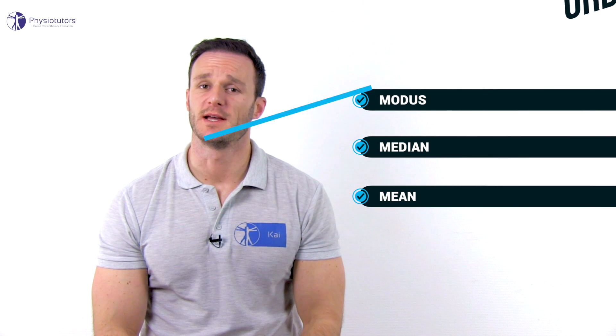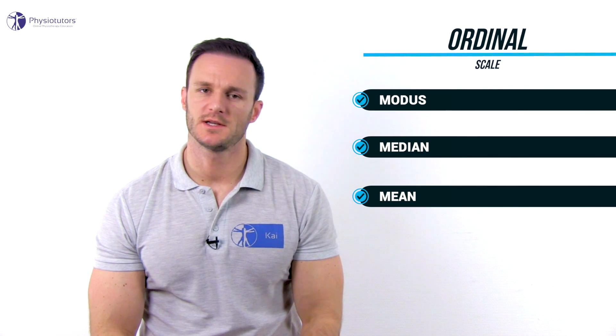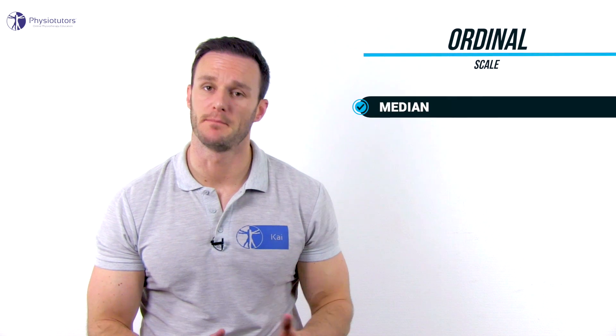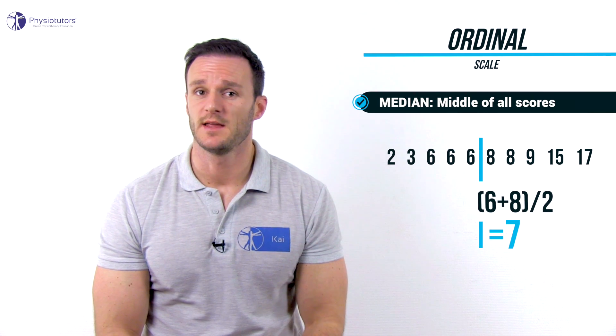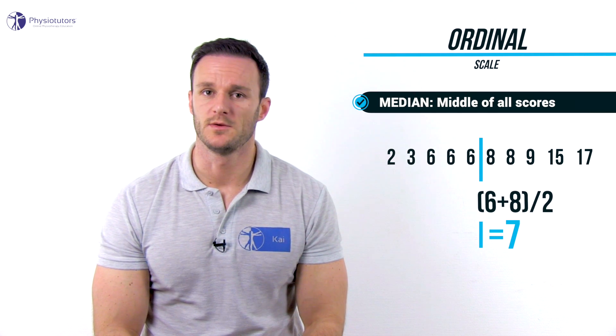Data that is measured on an ordinal scale allows you to calculate the median. The median is the value in the middle of all scores when they are ranged from low to high. In our example the median would be between 6 and 8, so we add 6 plus 8 and divide by 2, giving us 7.